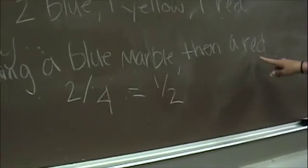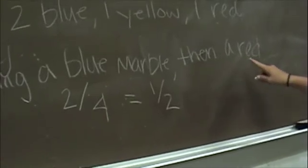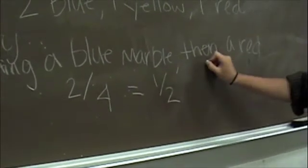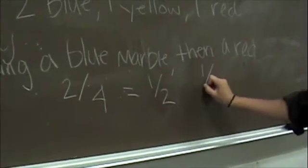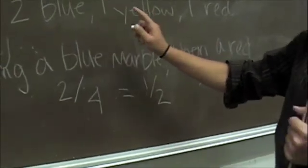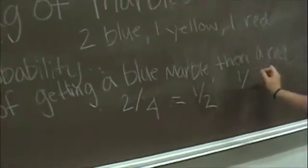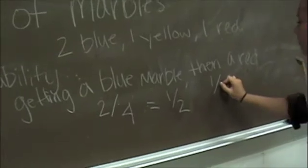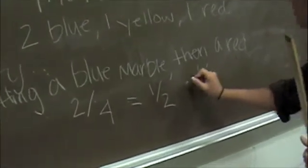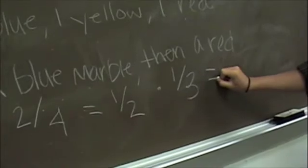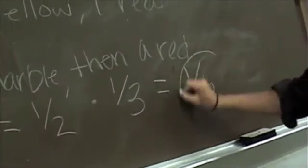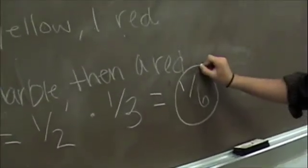Next, we have to figure out the probability of getting the red. Since there's one red, and we have already taken out one blue one — which is one marble — so the total is only 3 now. So then we have to multiply these together and get 1 sixth. That's your final probability.